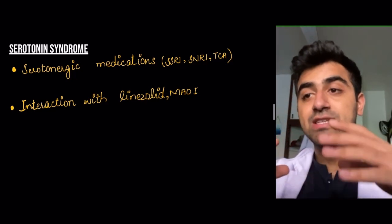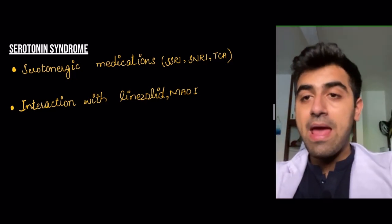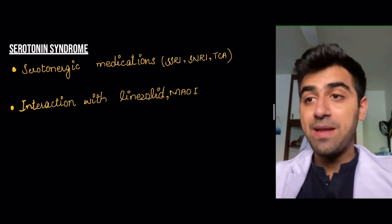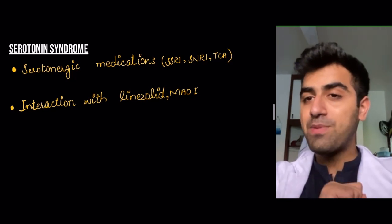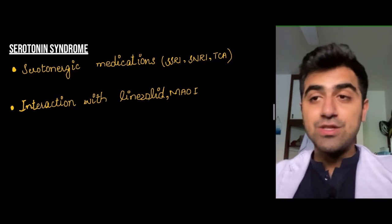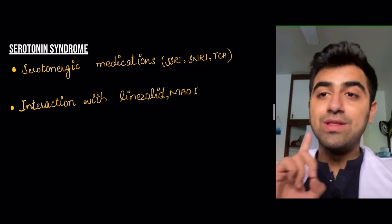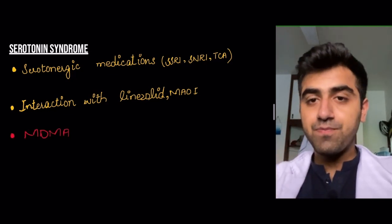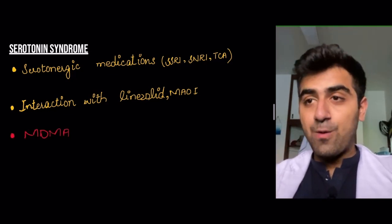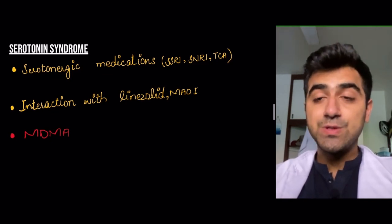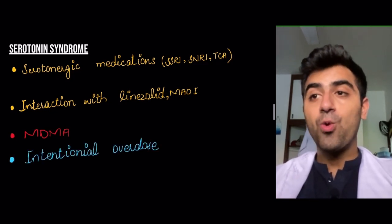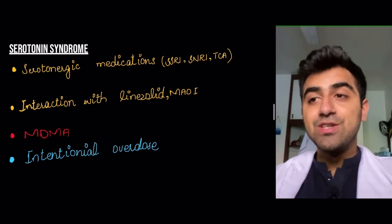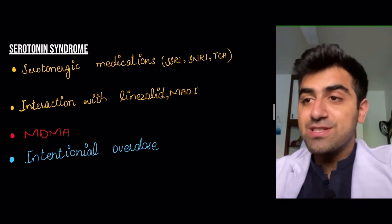Other causes of serotonin syndrome include MAOIs — monoamine oxidase inhibitors — where monoamine oxidase is the enzyme that breaks down dopamine, norepinephrine, and serotonin. MDMA, a stimulant drug, also increases serotonin in the synaptic cleft. Intentional overdose of SSRIs or SNRIs can also precipitate serotonin syndrome, as patients prescribed these drugs for depression or anxiety may overdose.